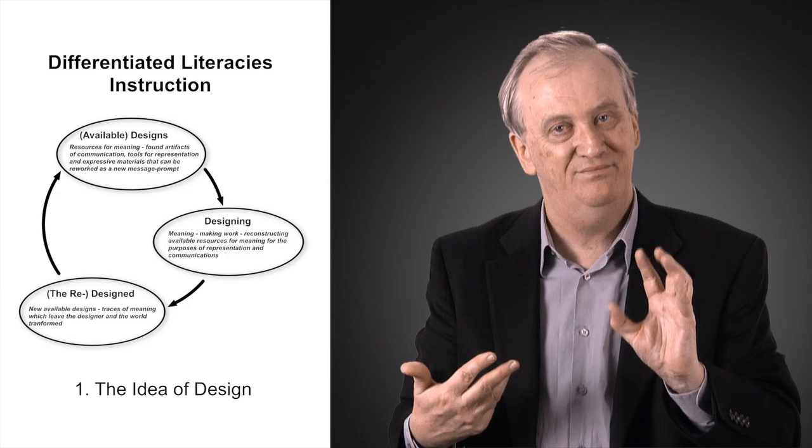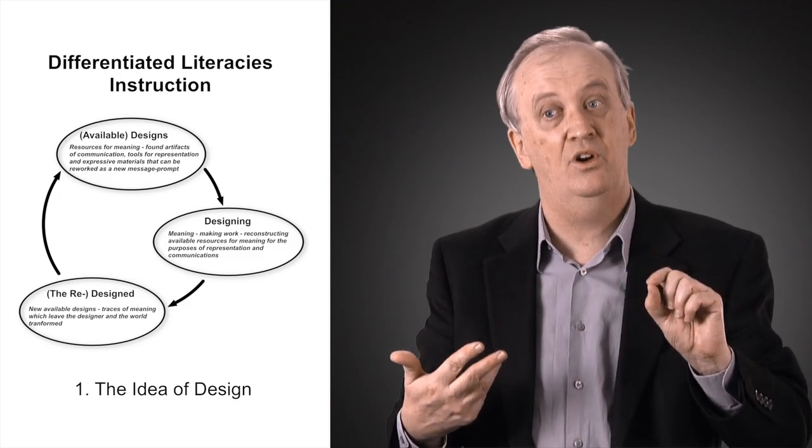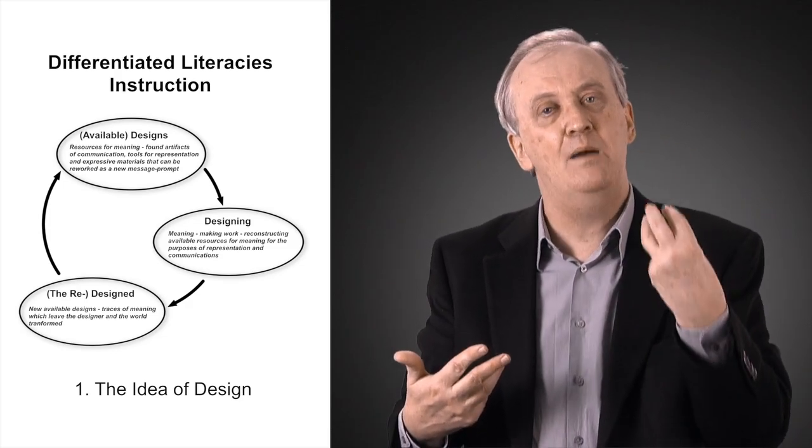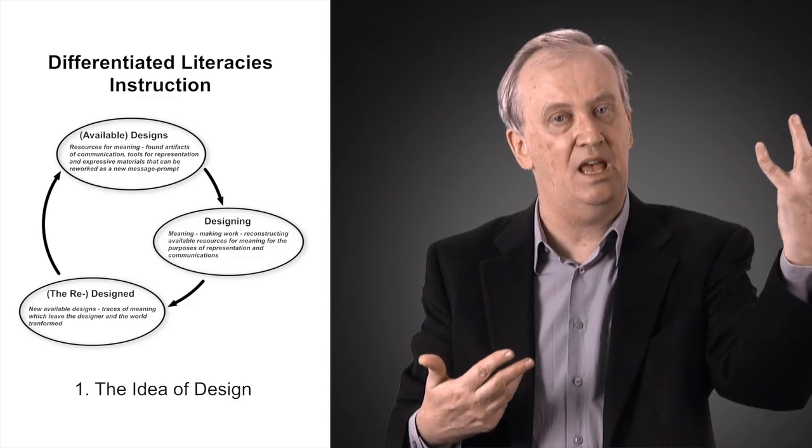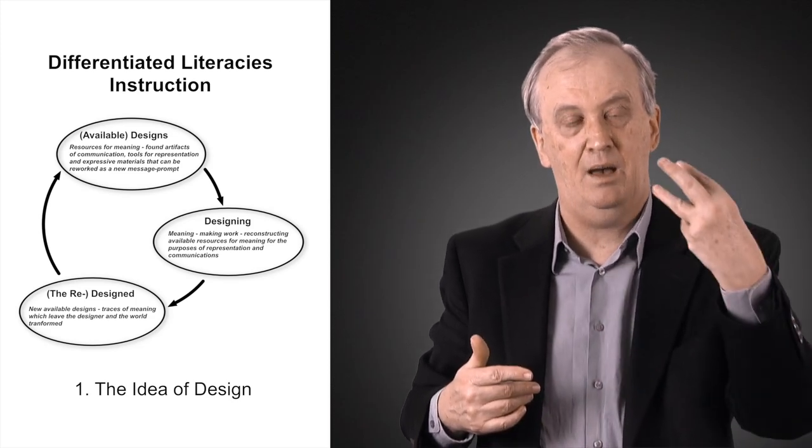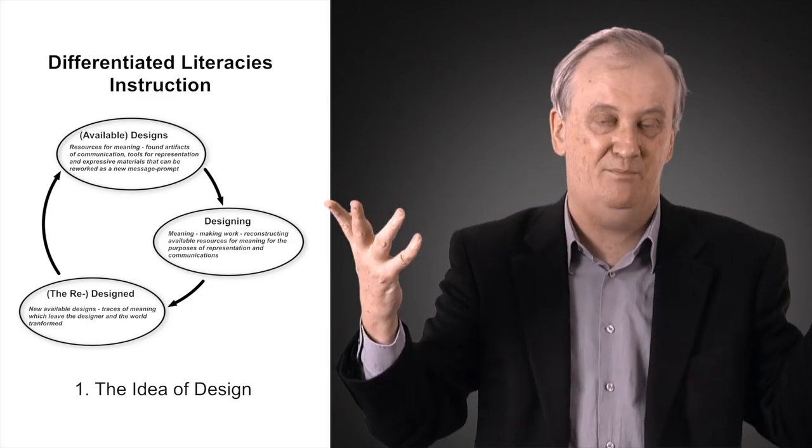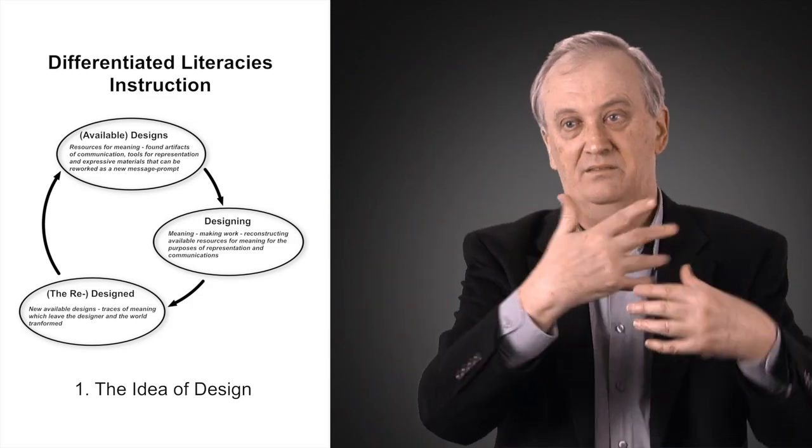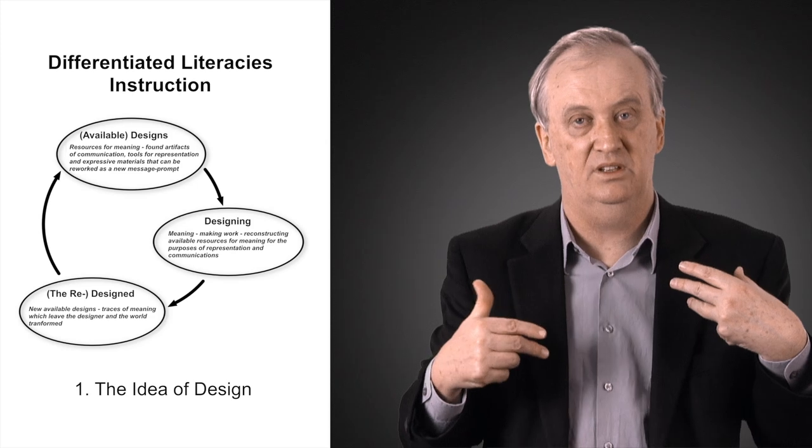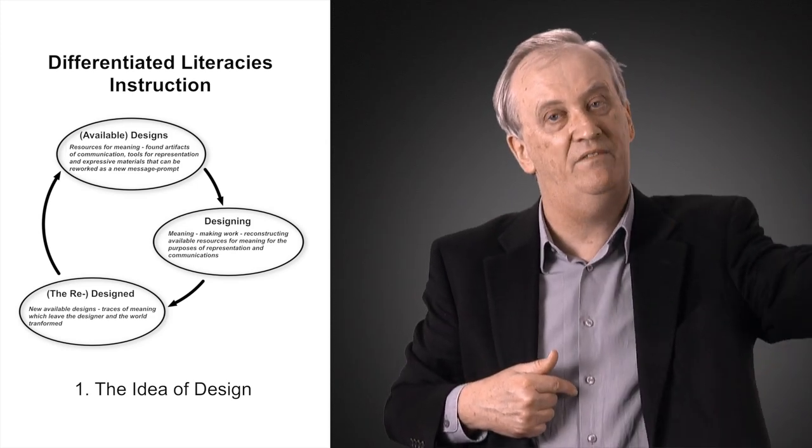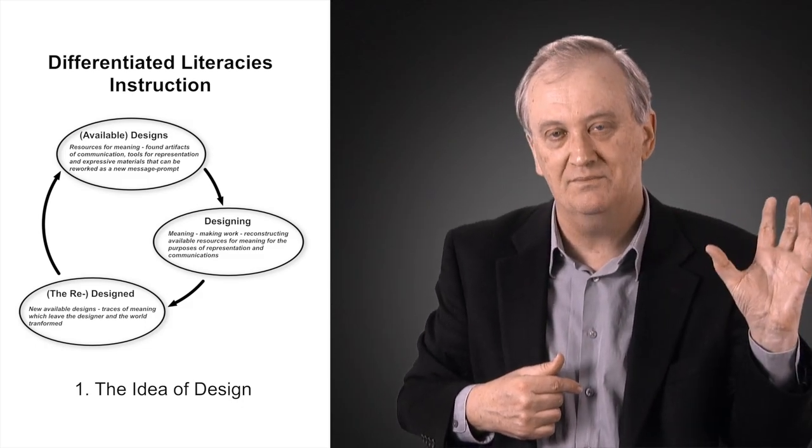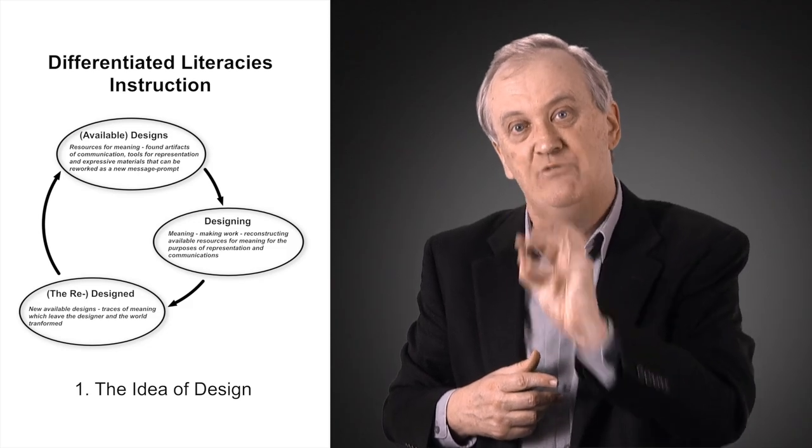Let's take writing as an example. So I've got to write a piece of geography, for example. I'm doing something about the natural environment in a geography text and sustainability. So what I have in the world is I have out in the world available designs which is how to write a report and I've got a whole pile of sample text and a whole pile of information. And then what I do is I take that raw material, these available designs.